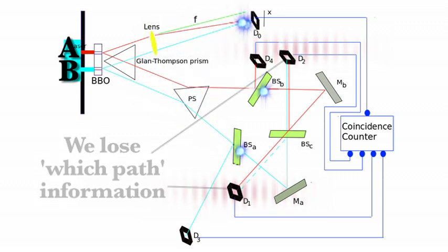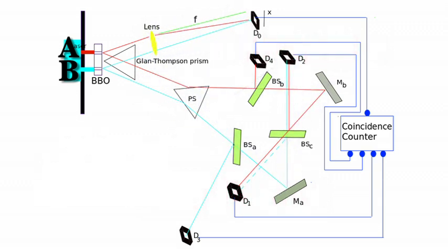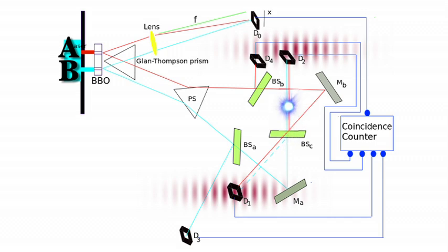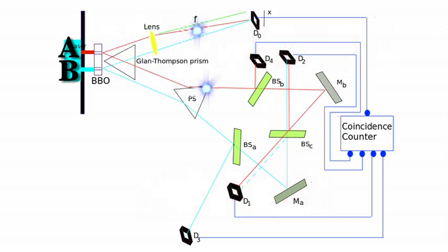Now here is one of the important implications of this experiment about what is causing collapse. Some argue physical interaction from the detector is what is causing the collapse. But if that was the case, D1 and D2 should cause collapse every time. But that is not what happens. If a photon makes it to D1 or D2, they always display an interference pattern. Yet every time a photon hits D3 or D4, a clump pattern is formed.